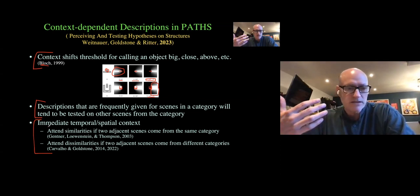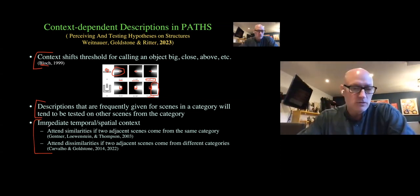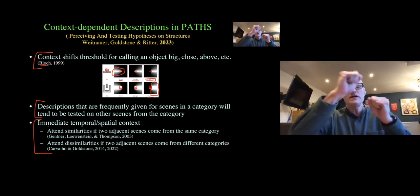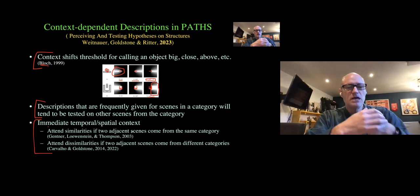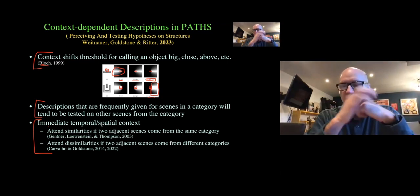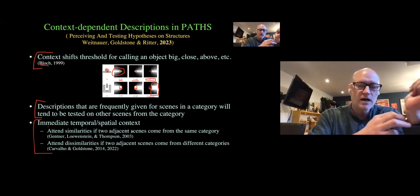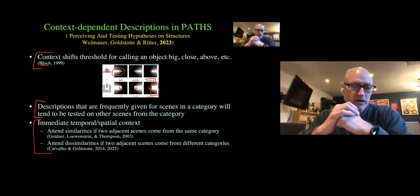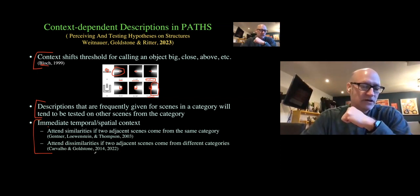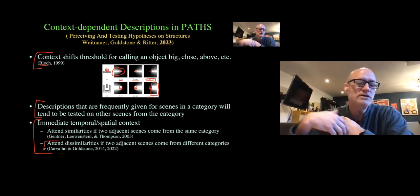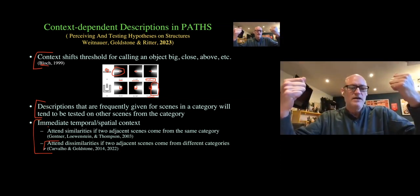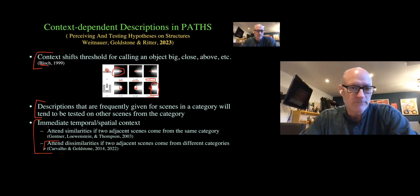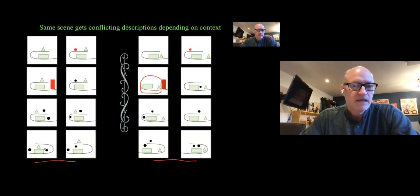You tend to pay attention to similar descriptions if two adjacent scenes come from the same category — adjacent either in a temporal sequence or spatially, depending on how the display is laid out. The other half of this: you tend to attend to dissimilarities between two scenes if those two scenes close to each other in time or space come from different categories.